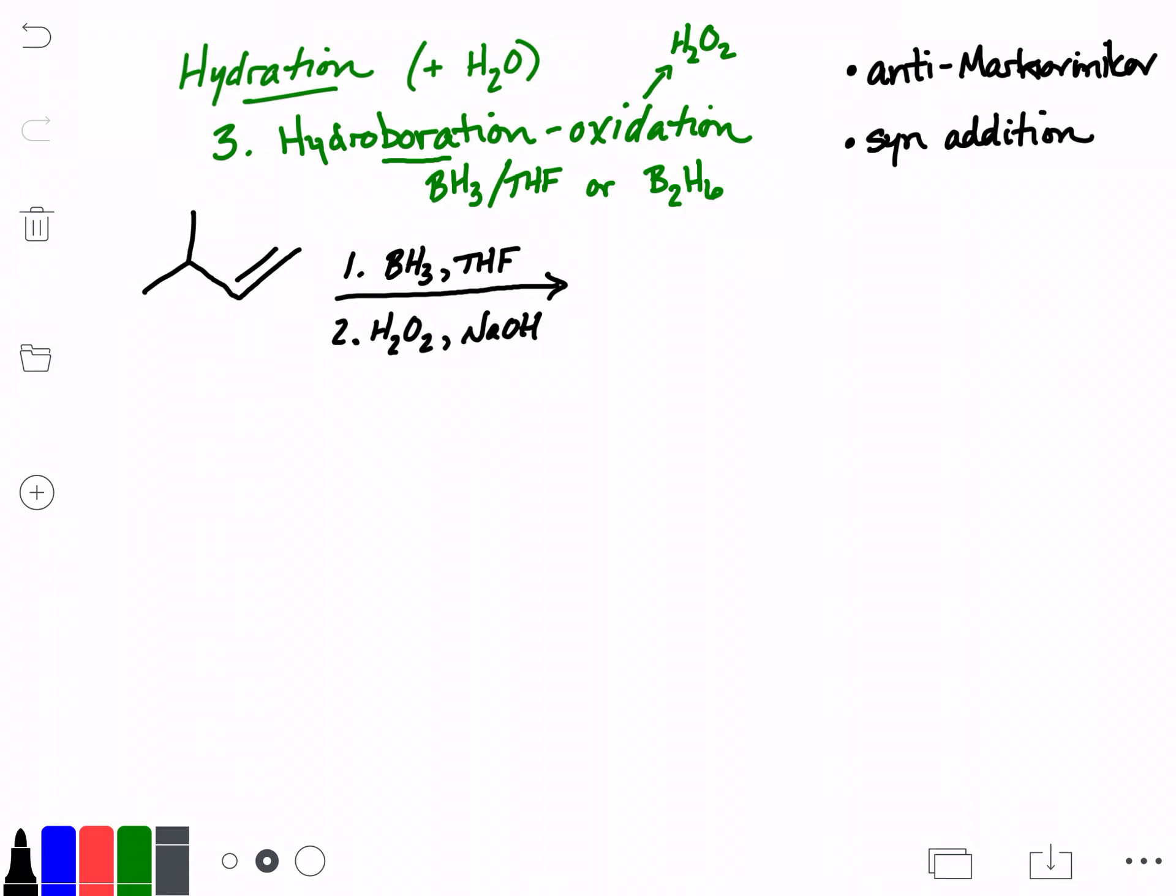And so what are we doing here? Well, again, the full mechanism is described in your textbook, but for the purposes of recognizing this and predicting products, what we'll say is we generate water being added across the double bond. But in contrast to the other mechanisms we've seen, in this case we get the H added to the more internal carbon and the OH added to the more external. And so this is the anti-Markovnikov addition product.